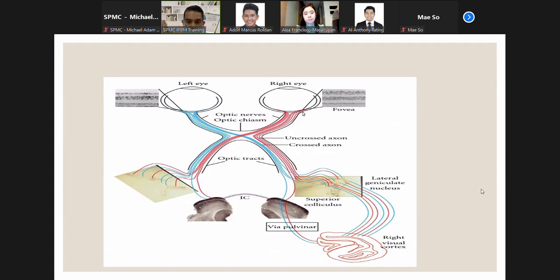At the optic chiasm, the axons originating in the nasal retinas cross from one side to the other. As you can see, there is crossing. The crossing of a fiber bundle from one side of the brain to the other is called decussation. The important term is decussation.